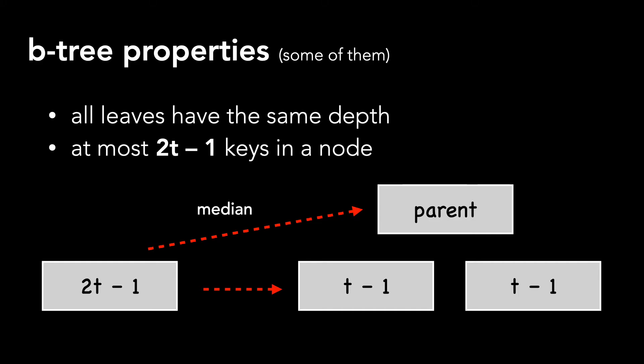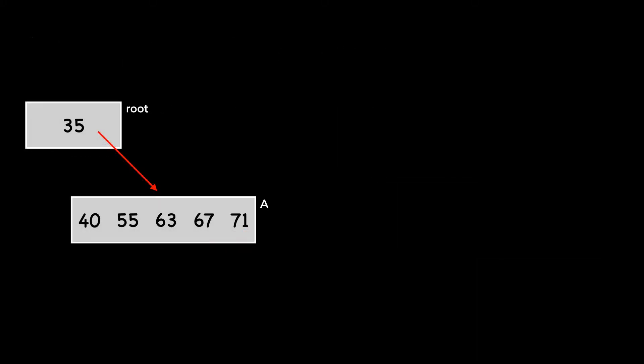Let's take a look at an example. Assume T is three. This means that we can have at most five keys in a node. Here's a node A with five keys, along with its parent, which is the root.